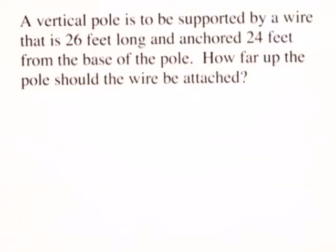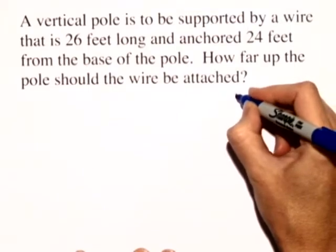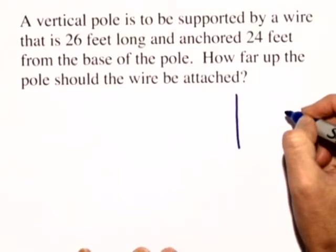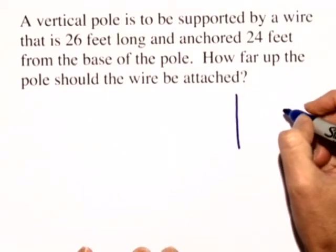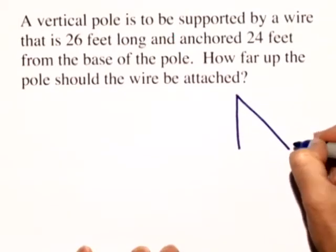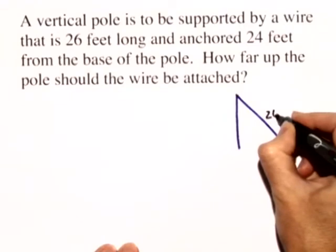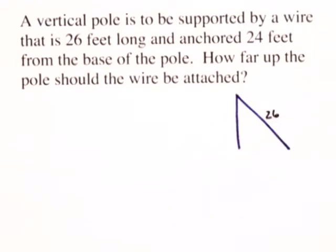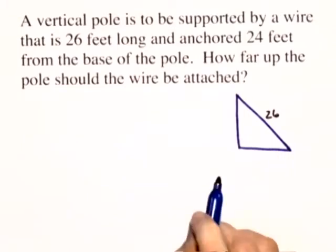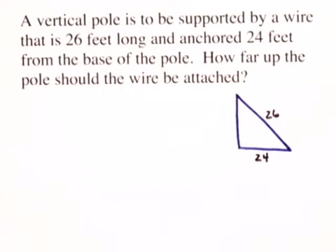Well, this problem is probably a good idea to draw a picture of what we're looking at. So here's our vertical pole, and it's to be supported by a wire that's 26 feet long. So here's the wire. It's 26 feet long, and that wire is anchored 24 feet from the base of the pole. So it's 24 feet in the horizontal distance.